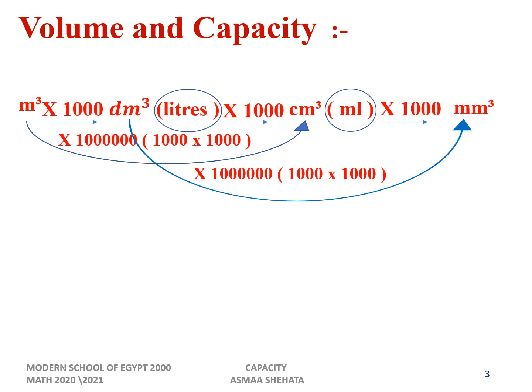If we want to convert from a small unit to a big unit — going in the opposite direction, to the left — we divide. From millimeter cube to milliliter, divide by 1000. From milliliter to meter cube, divide by 1 million. The arrangement is very important: meter cube, decimeter cube, centimeter cube, millimeter cube. Write liters beside decimeter cube and milliliter beside centimeter cube.